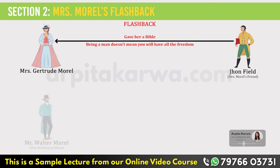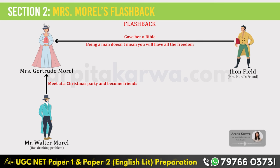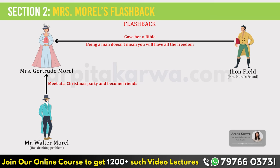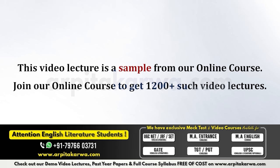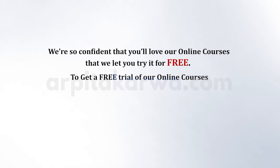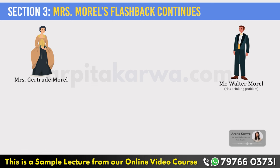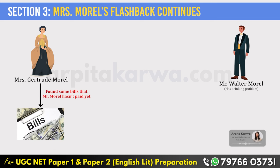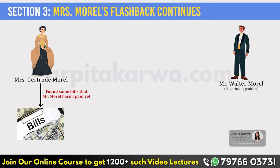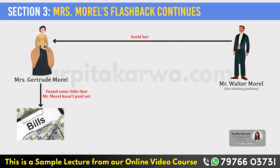Eventually Mrs. Morrill met Mr. Morrill at a Christmas party when she was 23 and he was 27. He approached her and asked her to dance, but she refused. So Mr. Morrill sat beside her and they talked for a long time, and that's how they became friends. They got married before the next Christmas and initially their married life went smoothly. However, after seven months of marriage, she found unpaid furniture bills in his coat pocket. When she confronted him, he scolded her for the first time, and their relationship started deteriorating from that point.